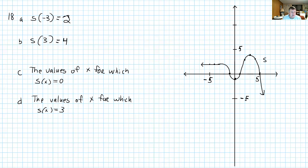Part c: the values of x for which s of x equals 0. So where is y equal to 0? We've got three points right here: when x is negative 1, when x is positive 1, and when x is 5.